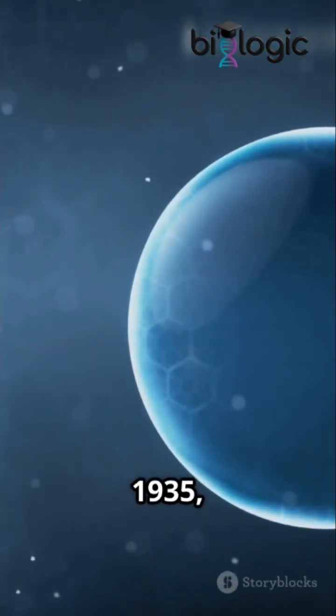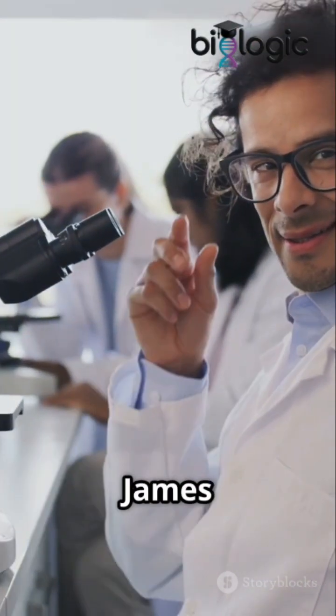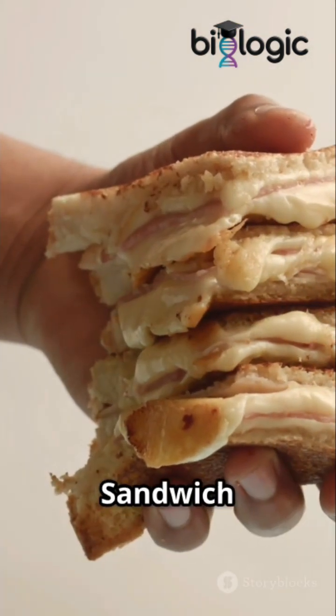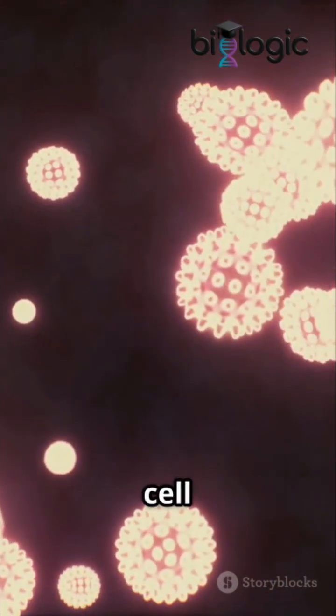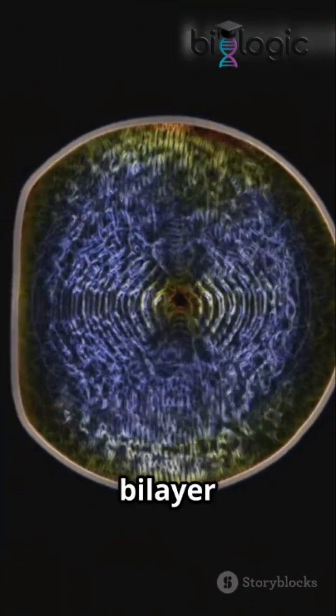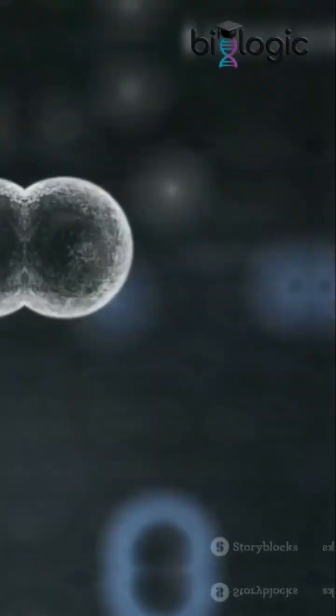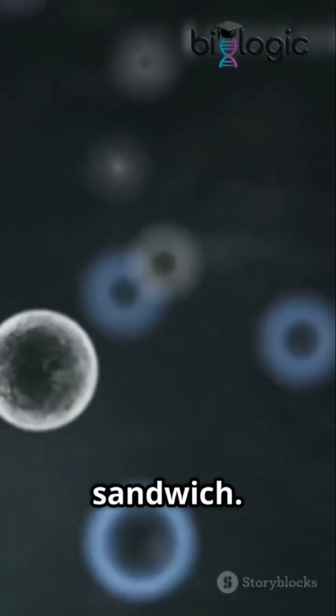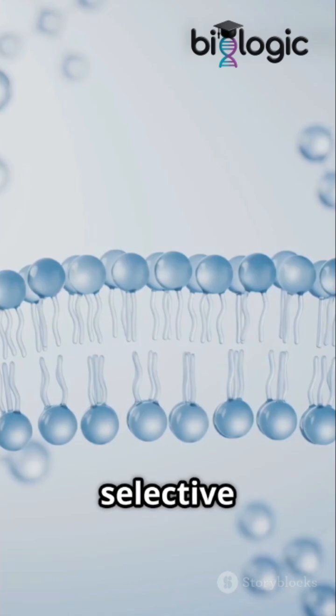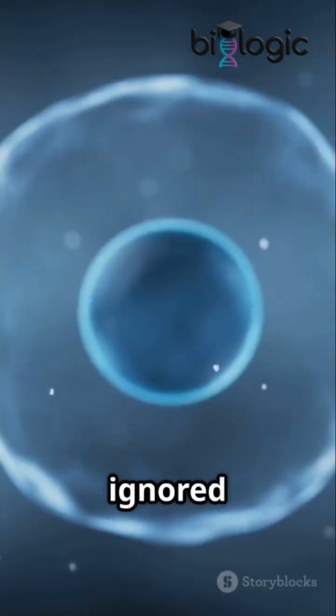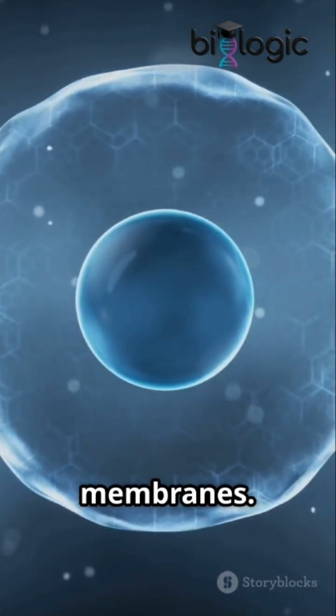In 1935, Hugh Danielli and James Davison proposed the sandwich model. They imagined the cell membrane as a lipid bilayer sandwiched between two layers of proteins, like a protein-lipid-protein sandwich. It explained selective permeability but ignored the dynamic nature of membranes.